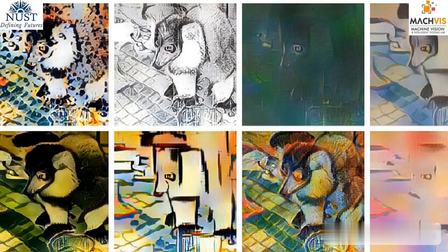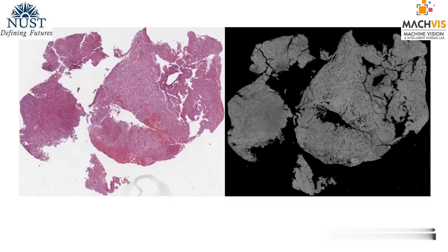Discrepancies exist in data distribution and domain-specific information between natural and medical images. In the McQuiz lab, we have worked on a simple yet effective model that directly extracts survival-related features without intermediate computer vision tasks. In this model, we first applied a set of mathematical, morphological, and thresholding functions to extract the tissue region from whole slide images while dropping the white background.